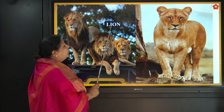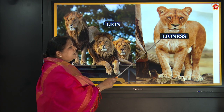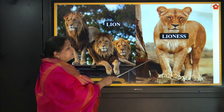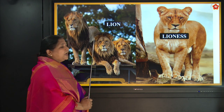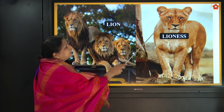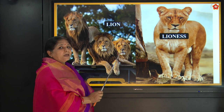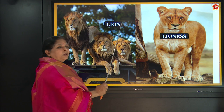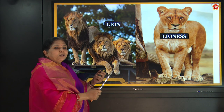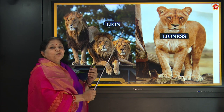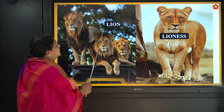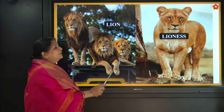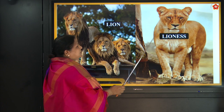Then lion, L-I-O-N, and lioness, L-I-O-N-E-S-S. Sometimes we make a mistake about which is which. In the animal kingdom, the male is very attractive and beautiful, while the female is just okay. But in humans it is not like that — men are not so beautiful and women are beautiful. The lion has a mane which looks so handsome. Lion, L-I-O-N, and lioness, L-I-O-N-E-S-S. Do not make a mistake.